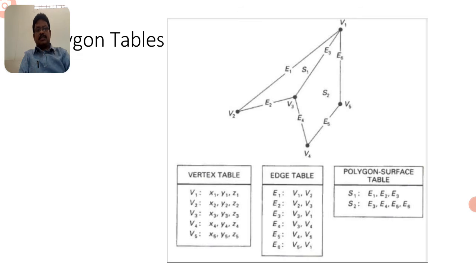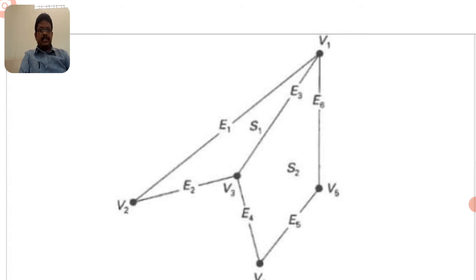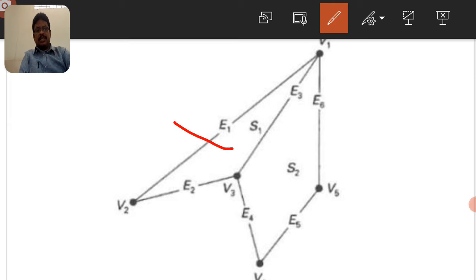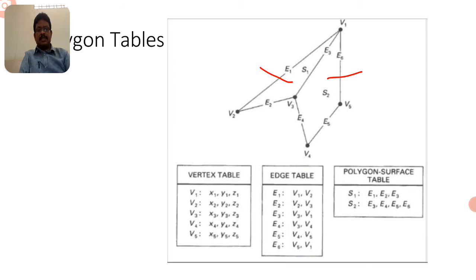Coming to polygon tables — they are divided into three categories: the vertex table, the edge table, and the polygon surface table. In this diagram there are five vertices: V1, V2, V3, V4, and V5, and six edges: E1, E2, E3, E4, E5, and E6. There are two surfaces, S1 and S2. The polygon surfaces are identified by these different vertices, edges, and two surfaces.